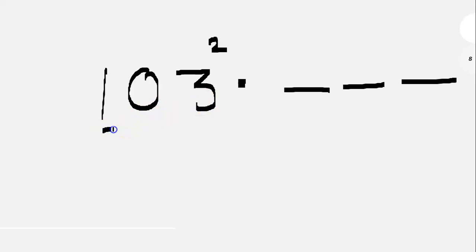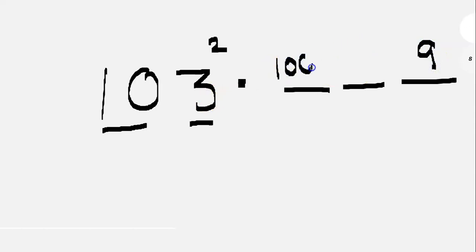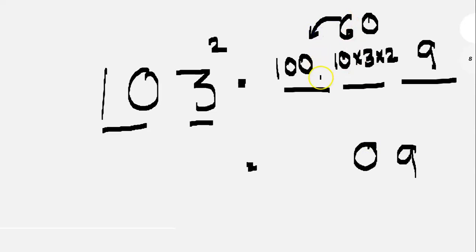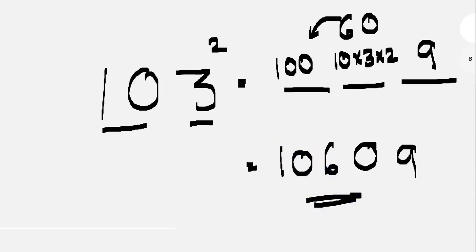What is 3 squared? That is 9. And 10 squared is 100. We multiply the number in the square: 10 times 3 times 2 gives 60. We write 6 in that place, carry 0. Then 100 plus 6 equals 106. This number is 3 — we have to write it.